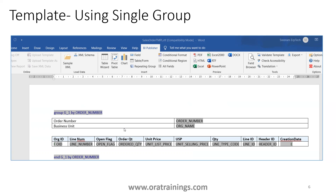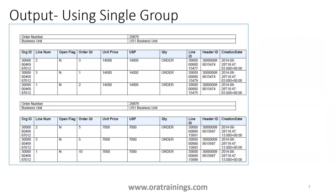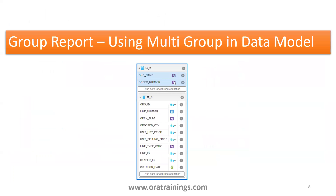Now let's look at the multi-group approach. First, let's see the output we're trying to design: order data on top and line data below. In the multi-group approach, the same query is divided into multiple groups — org name and order number are divided into G2, and the lines are in G3. G2 is the parent and G3 is the child.